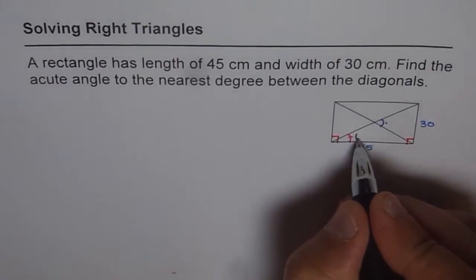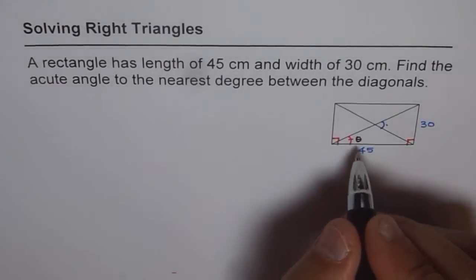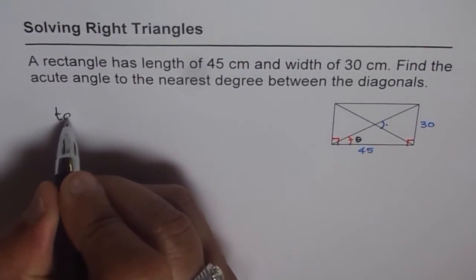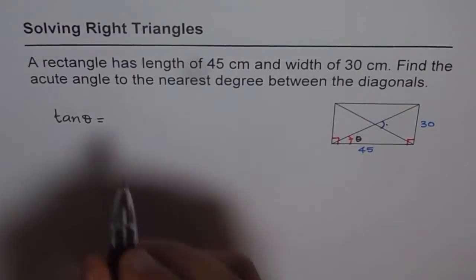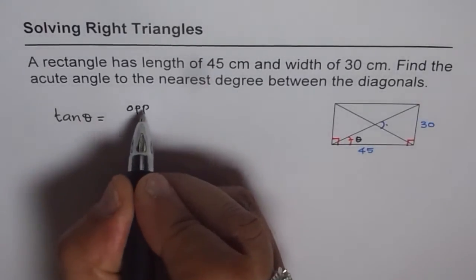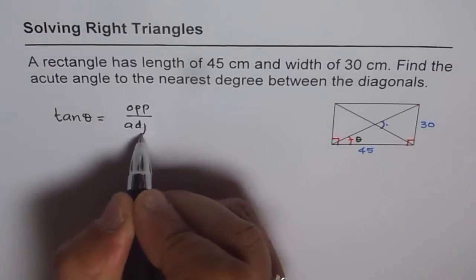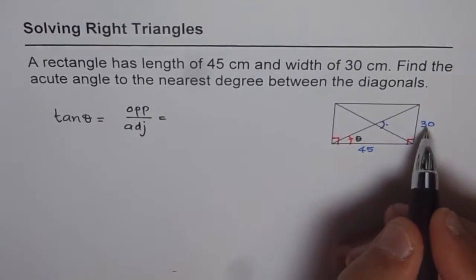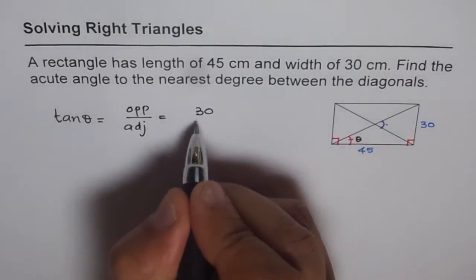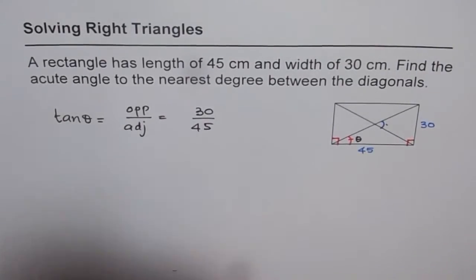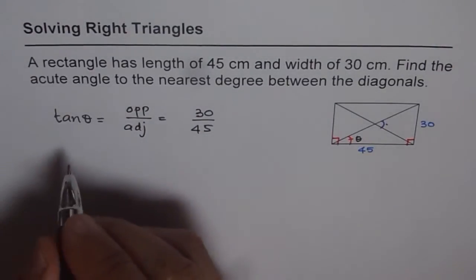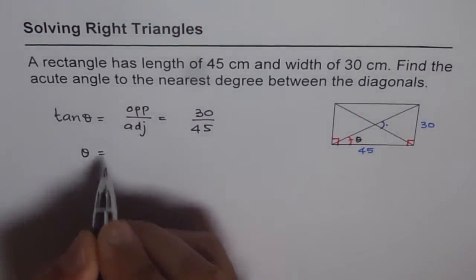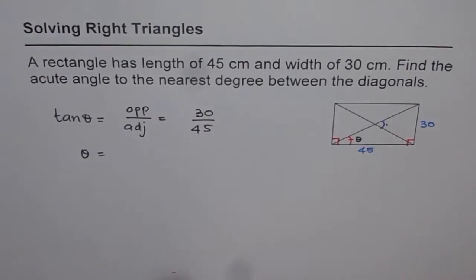Let's say the angle is theta. So what is tan of theta? Tan of theta is opposite over adjacent. Opposite side is 30 and adjacent is 45. So tan of theta is 30 over 45. We can always use calculator to find the angle theta. We can also simplify this. Since we are using calculator there is no need to simplify.